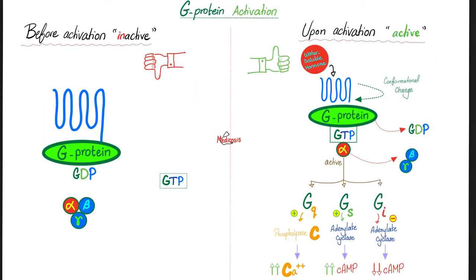Now let's talk about the G-protein. Why do we call it G? We call them G because they need GTP — guanosine triphosphate. When the G-protein is inactive, it sits together. But upon activation — when the water-soluble hormone binds to the receptor — it will bind GTP and leave GDP. The alpha subunit, which is now active, will leave the beta and gamma subunits alone.